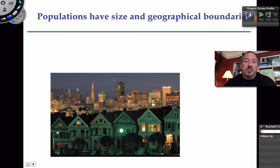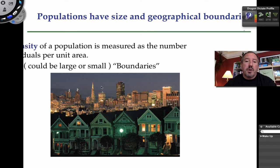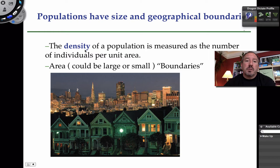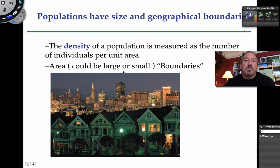Populations have sizes. Here's a picture of San Francisco. Usually you'll define a population, when you're considering studying it, by a geographic boundary. And when you do that, that brings up the whole notion of density — the number of organisms in the population over a particular unit area. It becomes more difficult if you're studying a larger boundary, but it's more accurate. Usually a population ecologist will study a smaller geographic boundary, and then extrapolate up to determine what the larger issues might be.